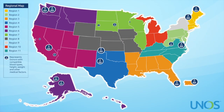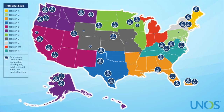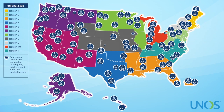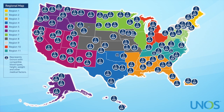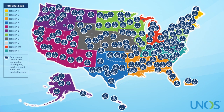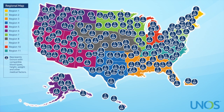And when a donor becomes available, a list is generated within our unit system in DonorNet, and that dynamically created list is the list that we allocate organs from. We're looking at information about the donors and information about the candidates, and we find those best matches and create that list dynamically.